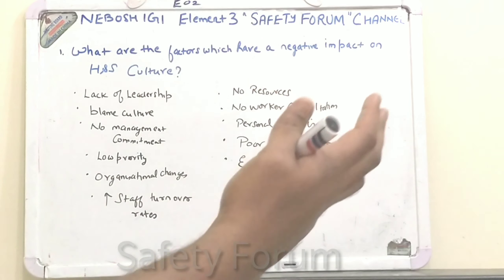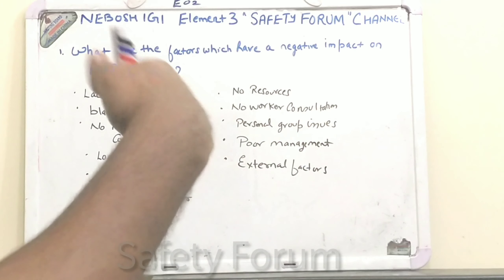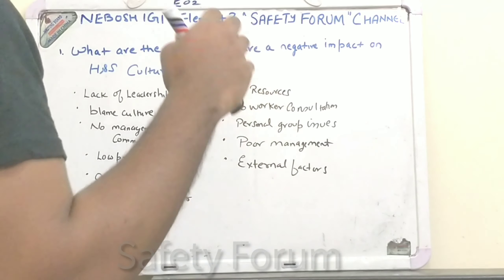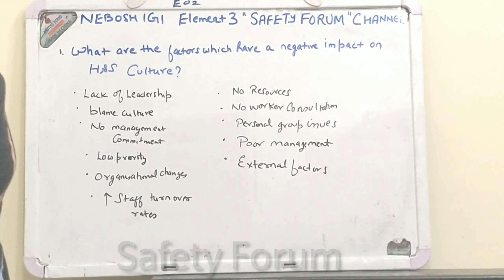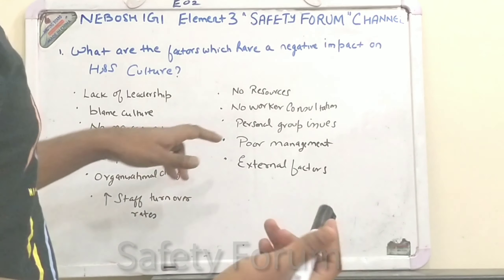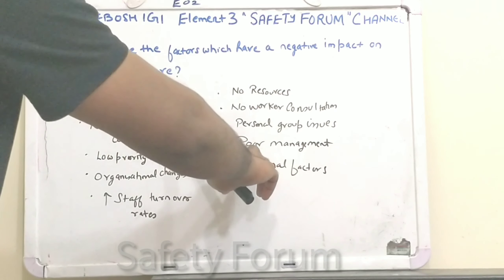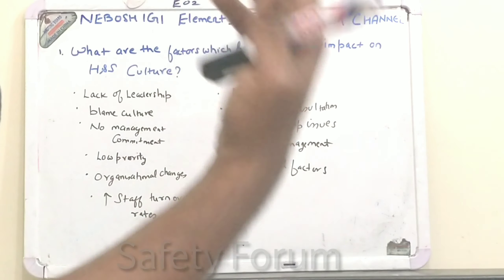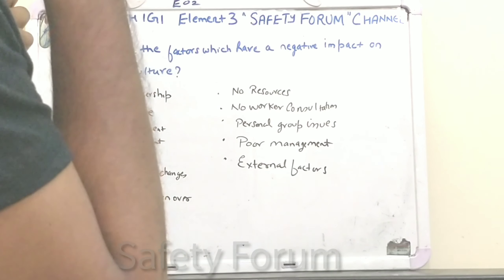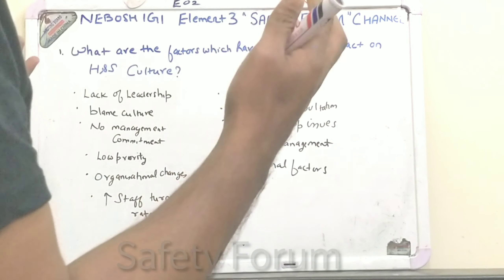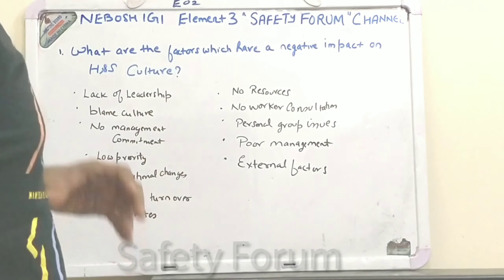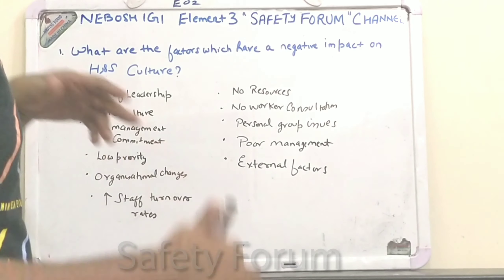Then we have personal and group issues, like interpersonal issues — for example, peer group pressure, bullying, and harassment — which will again lead to a negative impact. Then we have poor management: if the management systems, procedures, and protocols are very poor, it will again create a negative impact on the health and safety culture.